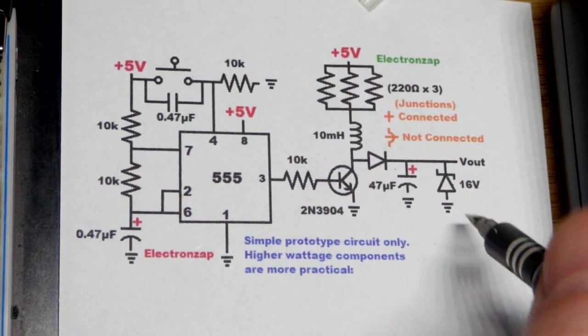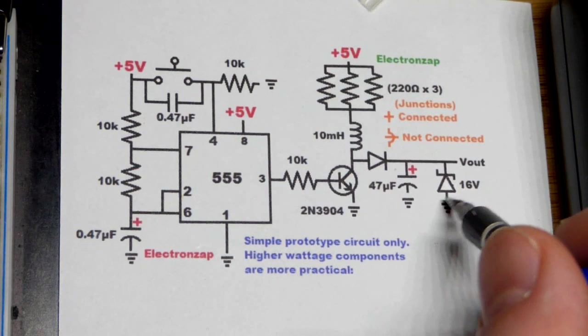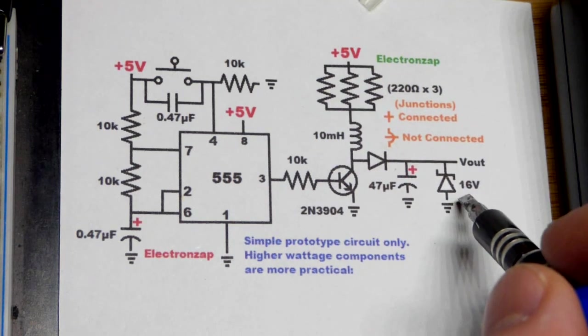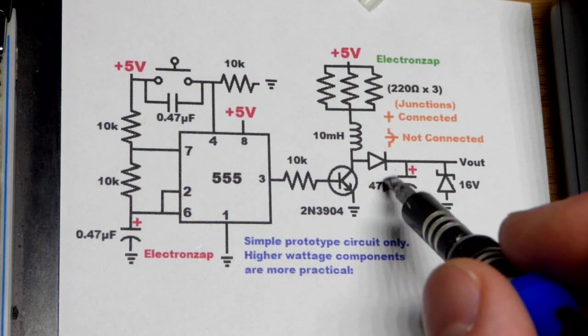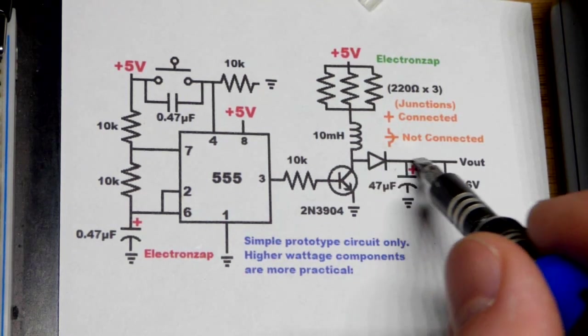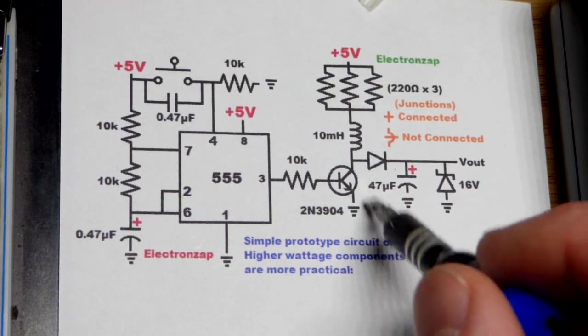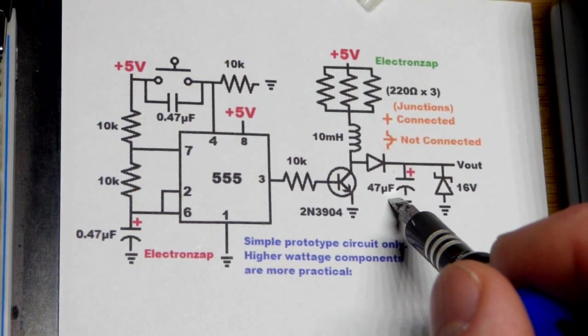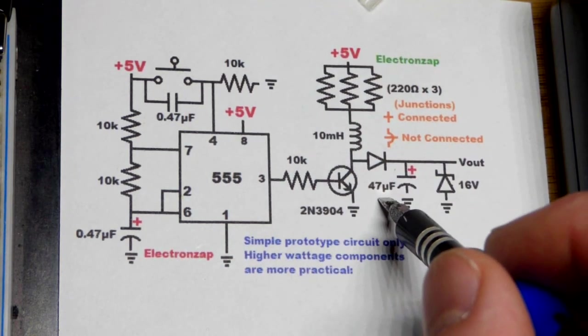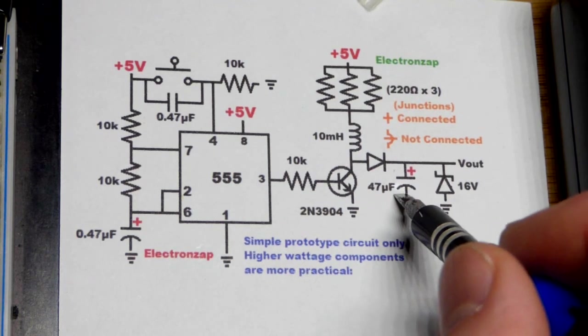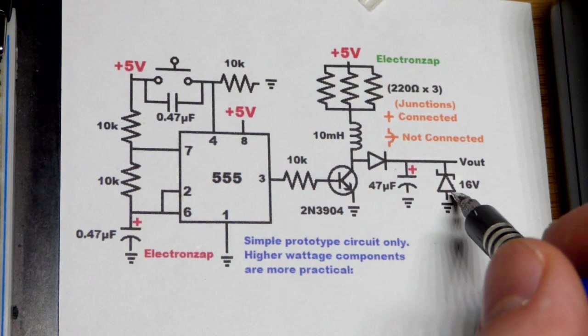Now we got a zener diode here. Zener diodes have the basic property - you use them reverse bias, so the cathode is actually more positive than the anode right there. It'll go into ground, use them reverse bias. They can conduct current reverse bias without being destroyed as long as you stay within their wattage limit. So in this case, 16 volts, then it will start passing current. So if we try to pump this above 16 volts, we won't - we'll have a path there for current to go to ground. It'll limit that voltage to 16 volts. That's what the capacitor charges to.